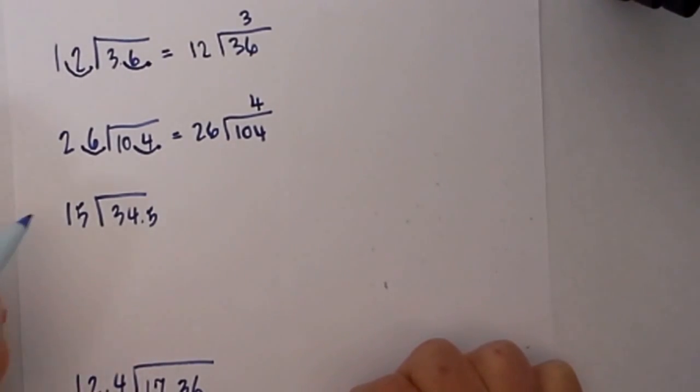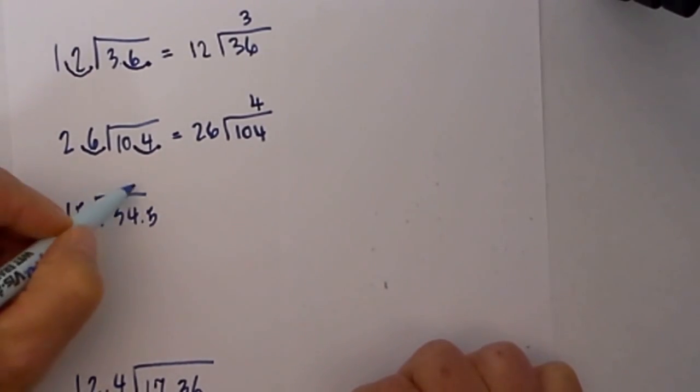Let's move to the next one. This one is pretty simple because we already have a whole number on the outside, so we don't have to do anything. Just to avoid mistakes, let's go ahead and move the decimal up here.